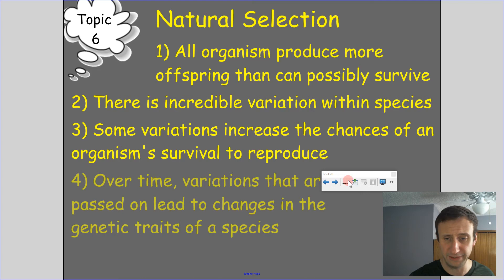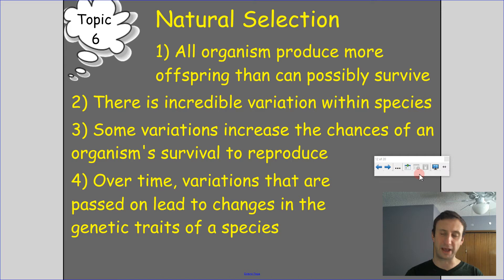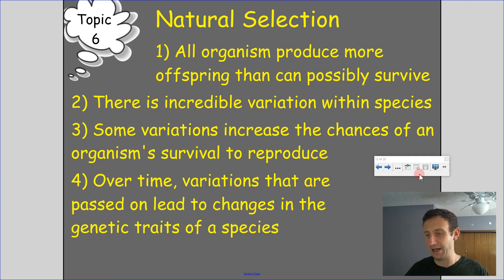Over time, variations that are passed on lead to changes in the genetic traits of a species. And then over a very long time we can actually have speciation occurring — where species become separate because they have a barrier between them, whether physical or otherwise, that prevents intermingling of genetic code.